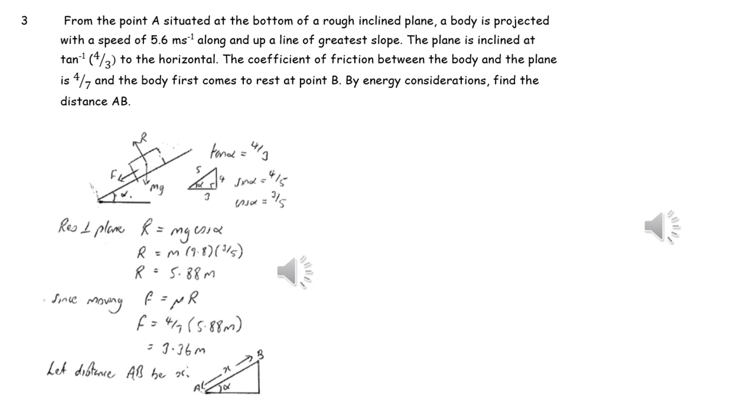We can use a Pythagorean triple for the 3-4-5 triangle to work out the values of sine alpha and cos alpha. We now need to be able to work out the magnitude of the frictional force. Initially, we can resolve perpendicular to the plane to find the normal reaction, and then since the object is moving, we can use F equals mu r to find the value of the friction.